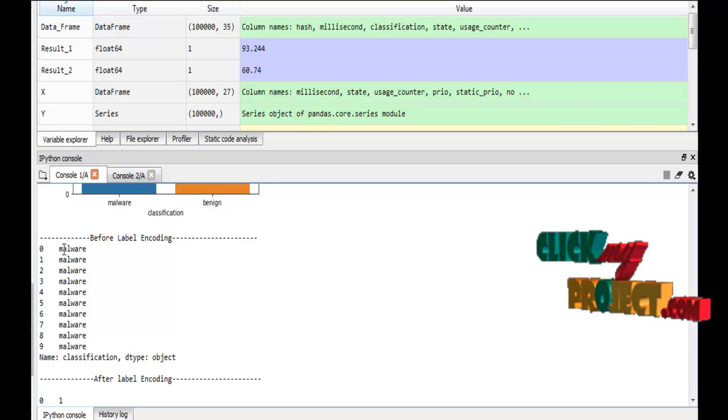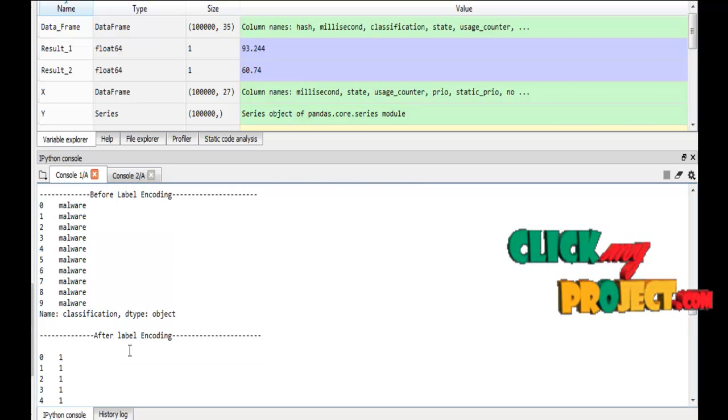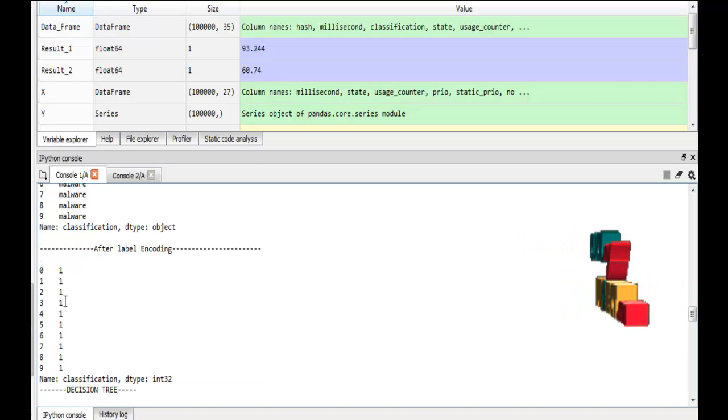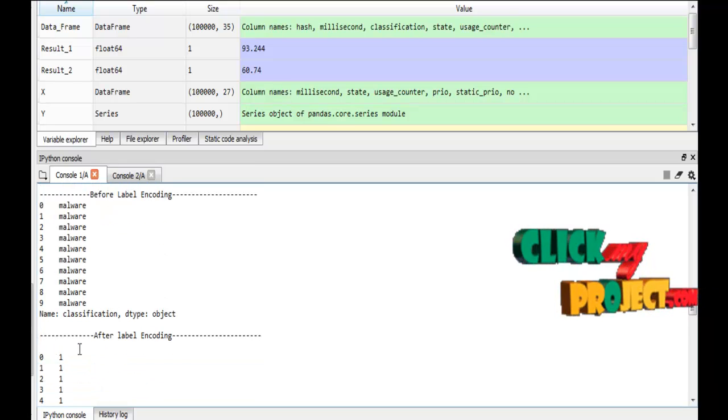Before label encoding, here you can see malware. Just you have to see after label encoding, it will convert malware to 1. I hope you can understand the label encoding.